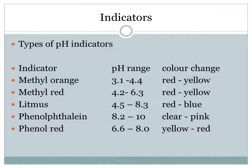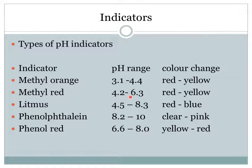Here are some examples of pH indicators. Methyl orange changes within the pH range of 3.1 to 4.4 — red in an acid and yellow in a base. Methyl red has a pH range of 4.2 to 6.3, also going from red to yellow. Litmus has a pH range of 4.5 to 8.3, going from red in an acid to blue in a base. Phenolphthalein ranges from 8.2 to 10, going from clear in an acid to pink in a base.